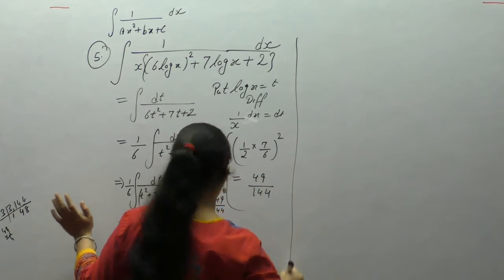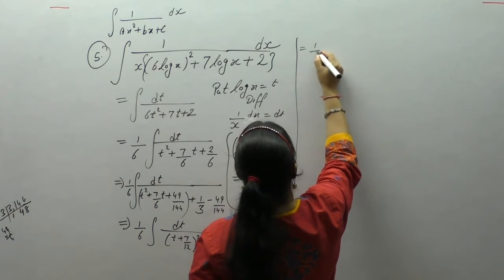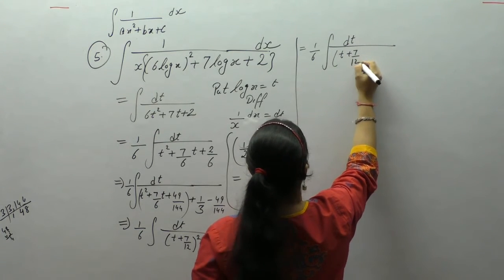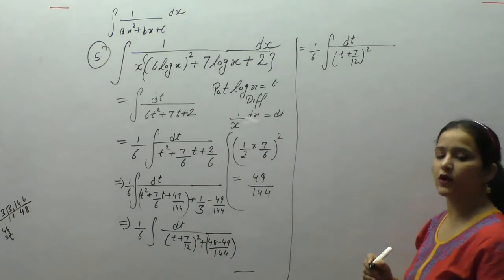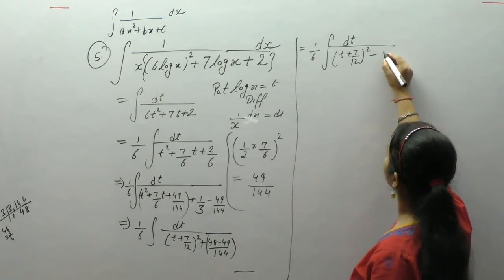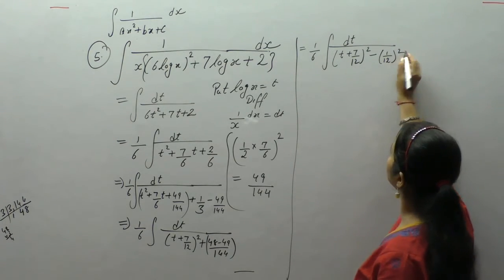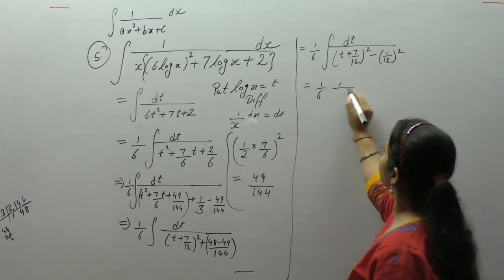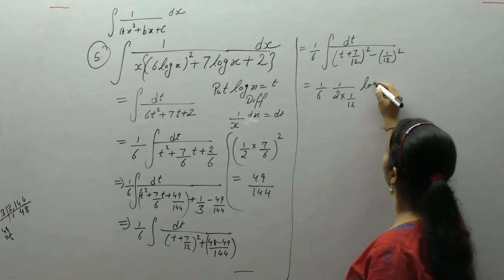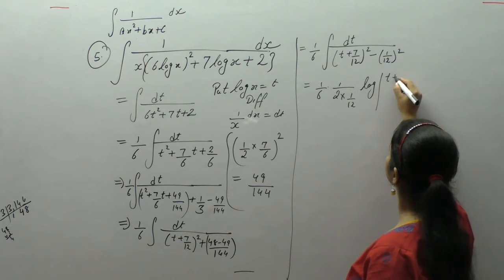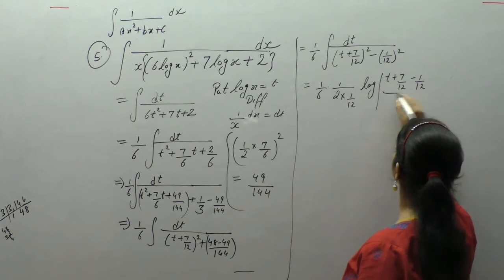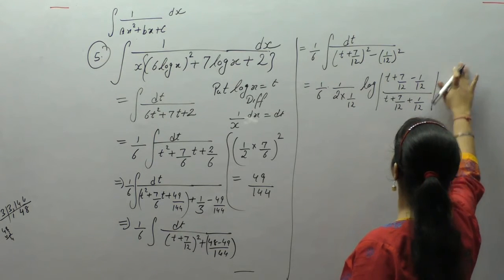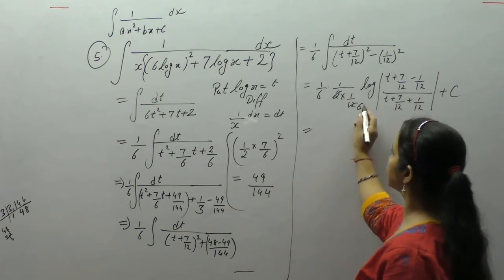In the next step, applying the standard formula (1/2a) · log|(x − a)/(x + a)| + C, with a = 1/12. The factors of 6 cancel.